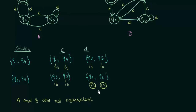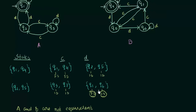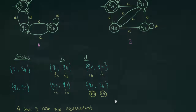Whenever you get this kind of condition, you can be sure that the two given automata are not equivalent. This is an example of two automata which are not equivalent, and we found that using this procedure. I hope this was clear to you. Thank you for watching and see you in the next one.